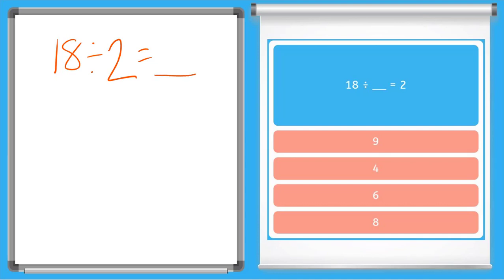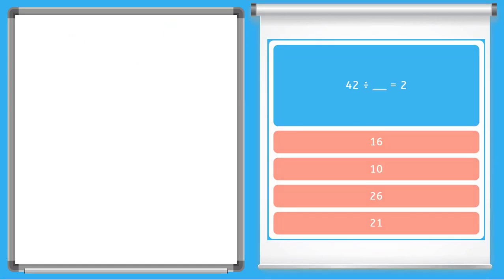I now have 18 ÷ 2 equals our unknown, and do you know your facts? 18 ÷ 2 = 9. Let's try another one.